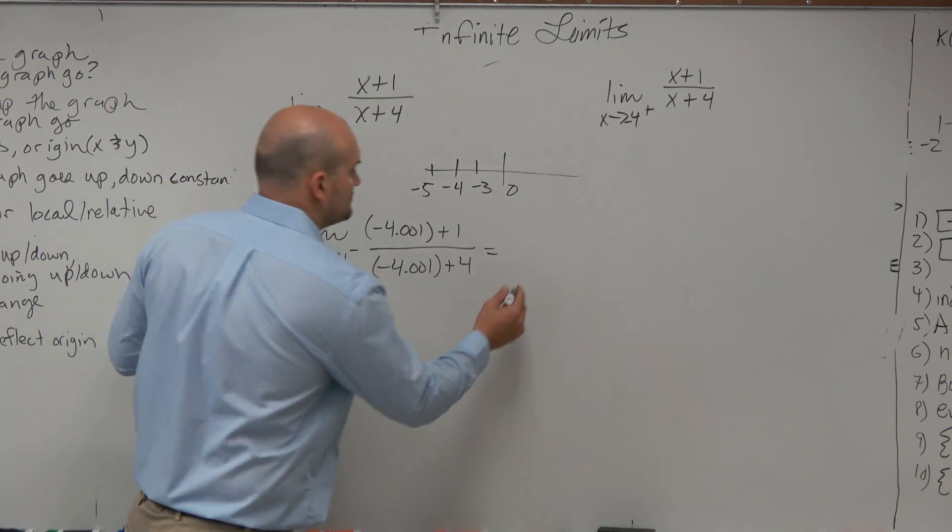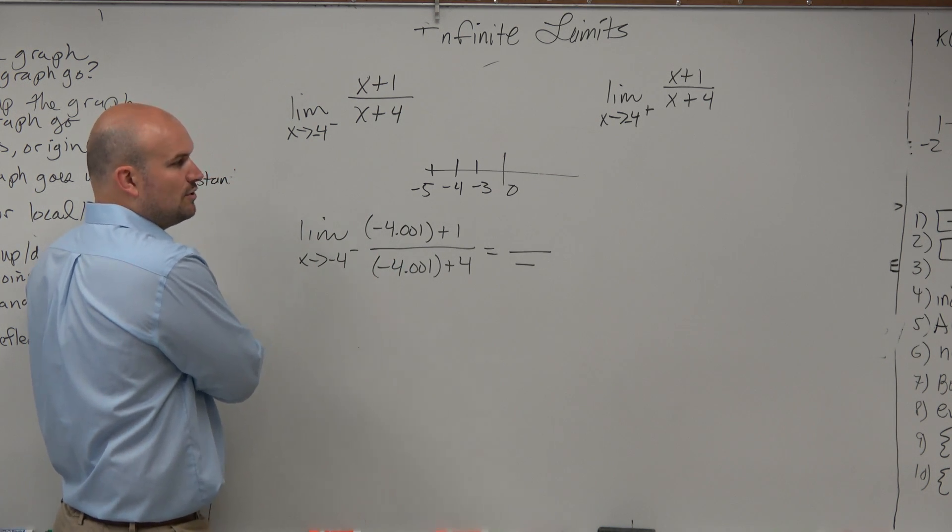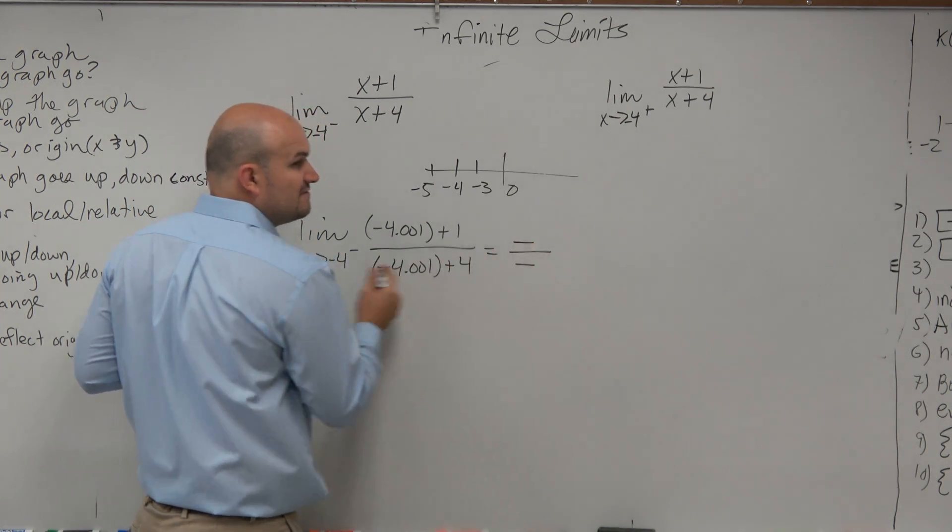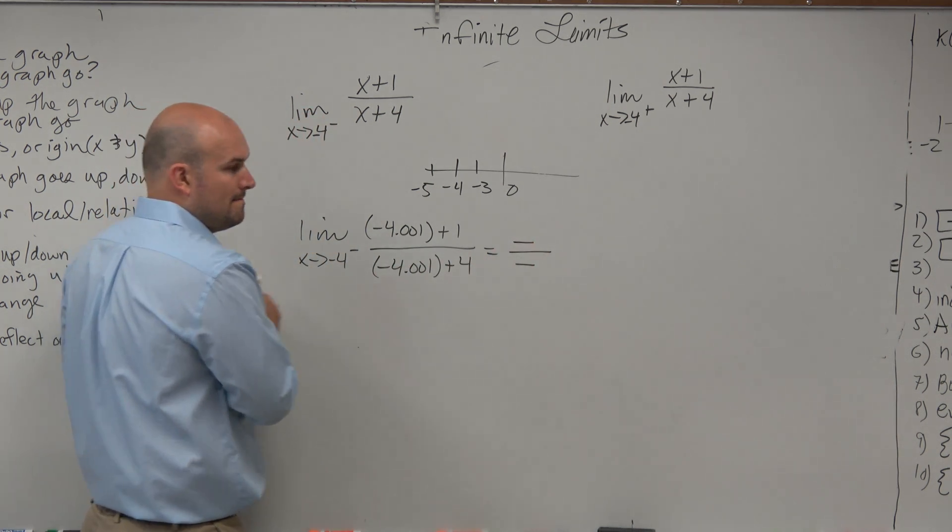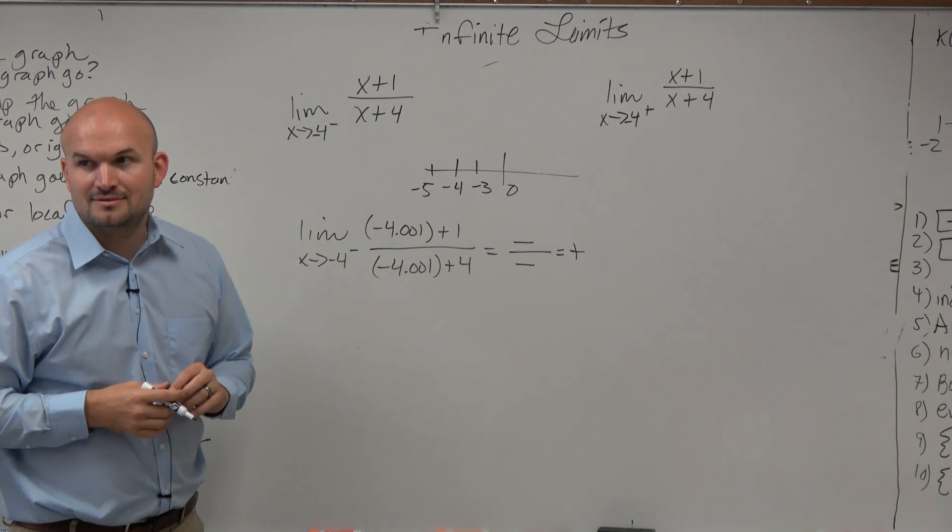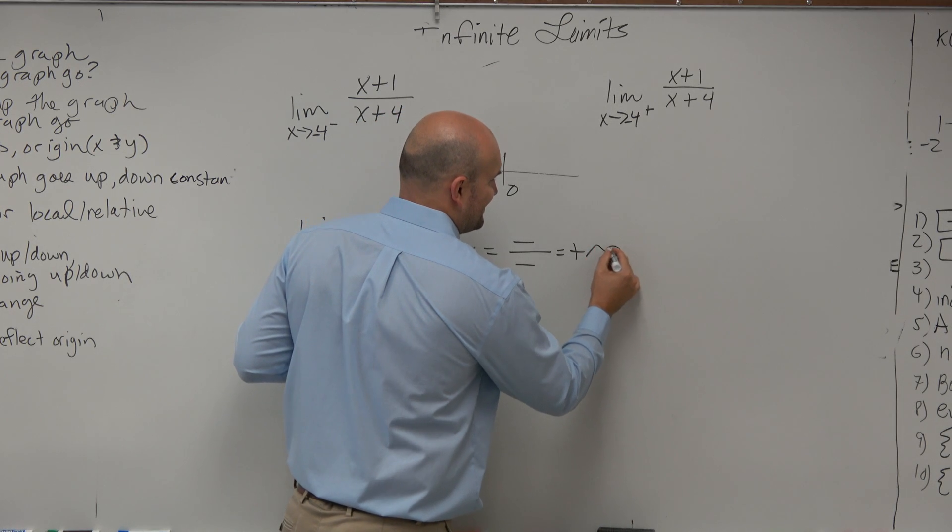Negative. Over here, negative 4.001 plus 1. Are you going to get a positive or a negative number? Negative. Negative divided by negative is positive. Guess where it's going to go? Positive infinity.